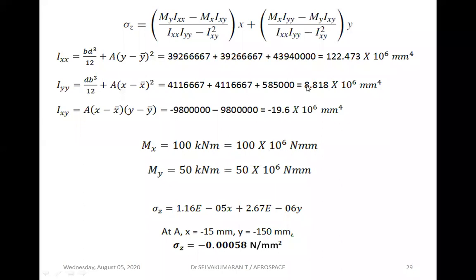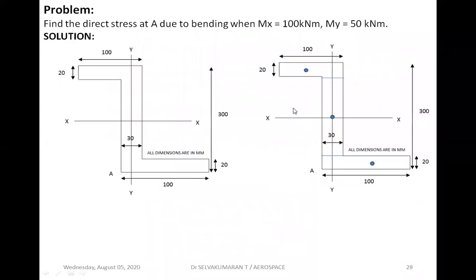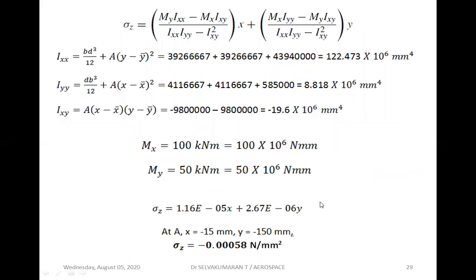Keeping 10⁶ as a common factor throughout for Ixx, Iyy, and Ixy makes it easy to cancel in numerator and denominator. Substituting all values — Mx, My, Ixx, Iyy, Ixy — into the sigma_z expression, at coordinates x = −15 mm and y = −115 mm for point A, you will get the direct stress at that point.